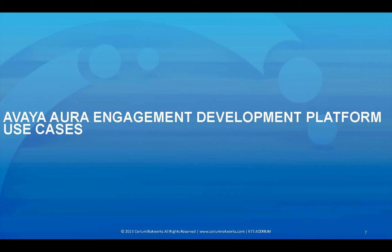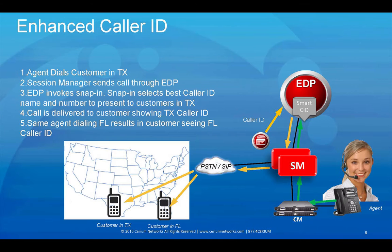Now I'll talk about the various use cases that leverage snap-ins. Inbound and outbound caller ID manipulation is complex and cannot easily be manipulated dynamically within communication manager — EDP can solve for this. When an agent makes an outbound call to a customer in Texas, session manager sends the call through the engagement development platform, EDP invokes the outbound caller ID snap-in, and the snap-in selects the best caller ID name and number to present to the customer in Texas.